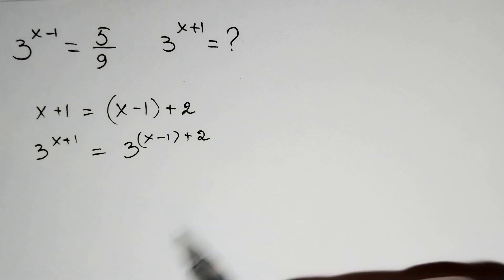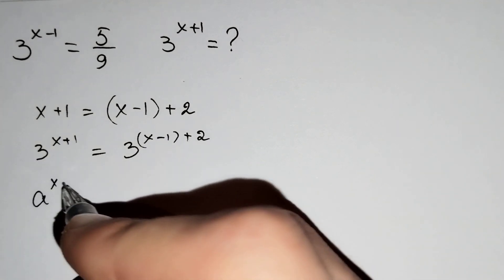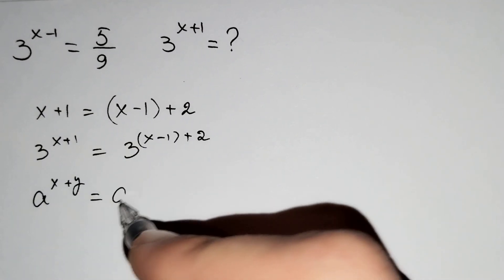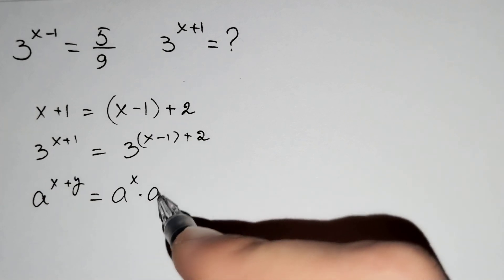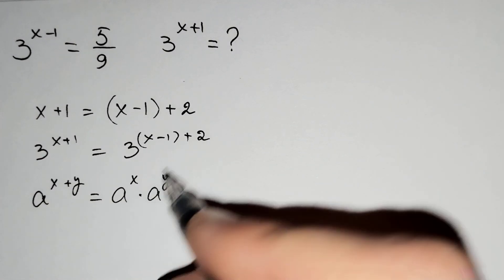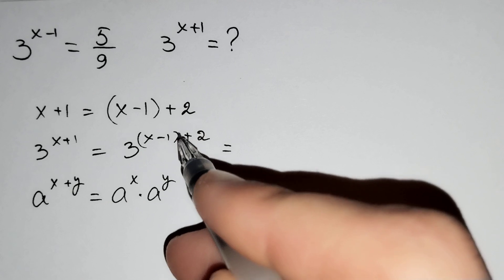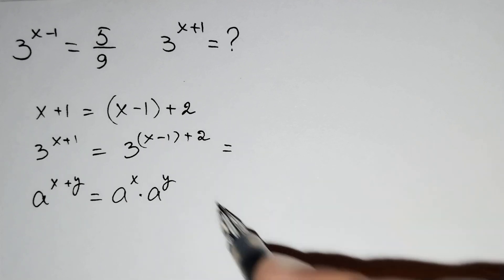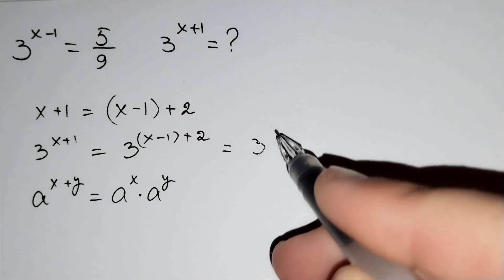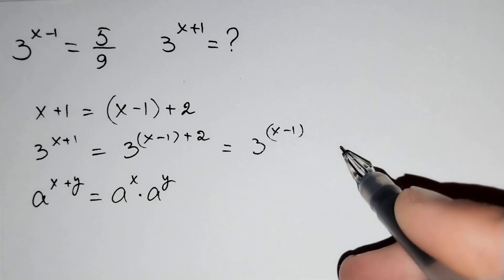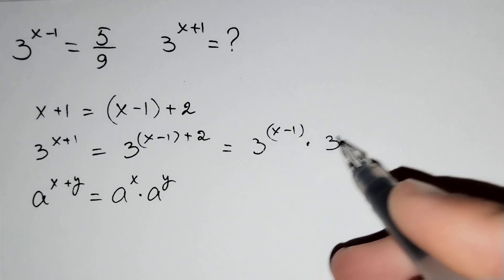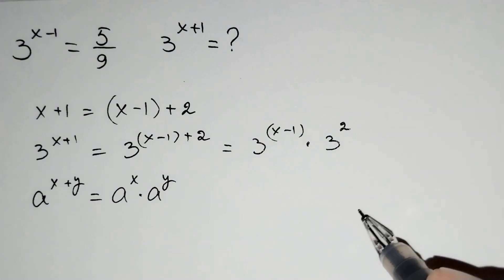And you know that a power x plus y equals to a power x times a power y. That's why 3 power x minus 1 plus 2 equals to 3 power x minus 1 times 3 power 2.